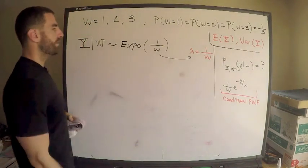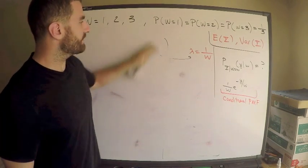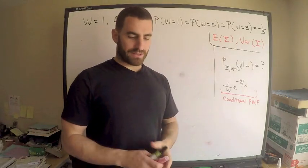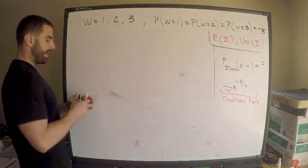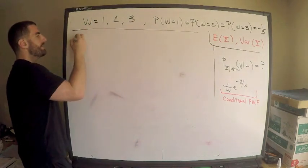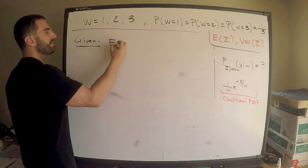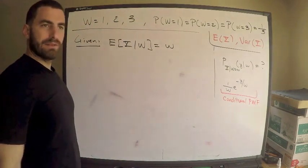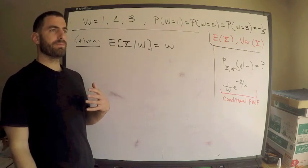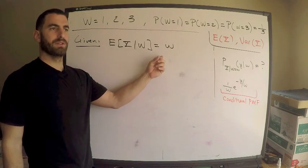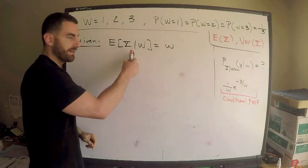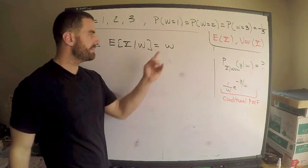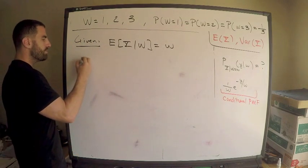Let's get right to it. First, the easier thing: what is E[Y]? From what was stated, we are given that the expectation of Y given W is exactly W — because the conditional distribution of Y given W is exponential with mean W. So the conditional expectation is W. That's the mean of an exponential with that parameter.